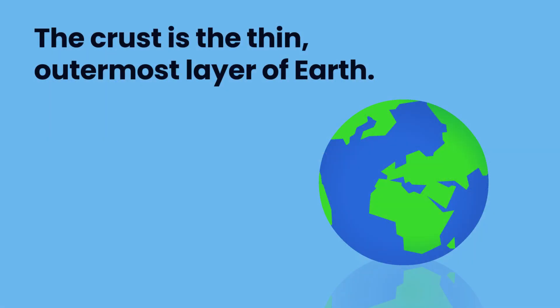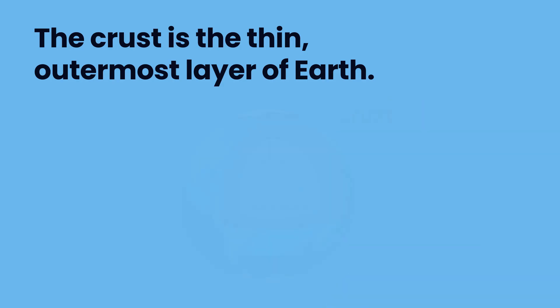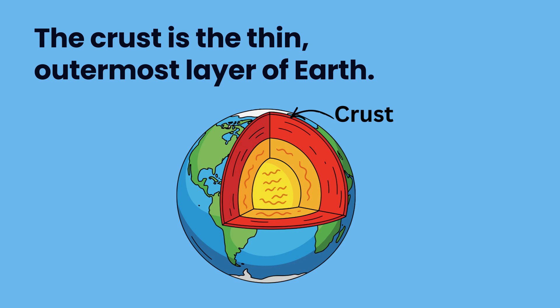The crust is the thin outermost layer of the earth. It's where we live, where the oceans sit, and where mountains rise. Even though the crust feels huge to us, it's actually very thin compared to the rest of the earth. There are two types of crust: continental crust, which forms underneath land, and oceanic crust, which is found under the ocean.